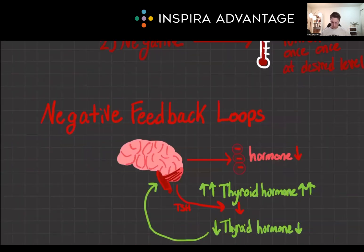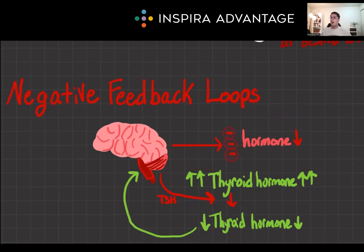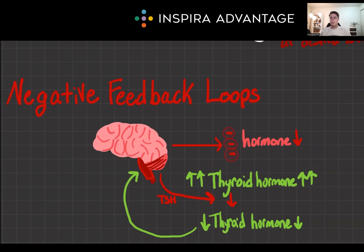Now let's zoom in on negative feedback loops with an example that hits close to home. Imagine your body is a finely tuned orchestra and the hormones are musicians. When one plays too loudly — meaning the hormone level is too high — the conductor, or the brain, signals it to quiet down. This is essentially what's happening in a negative feedback loop. The brain, particularly the hypothalamus and pituitary gland, plays a key role in conducting here.